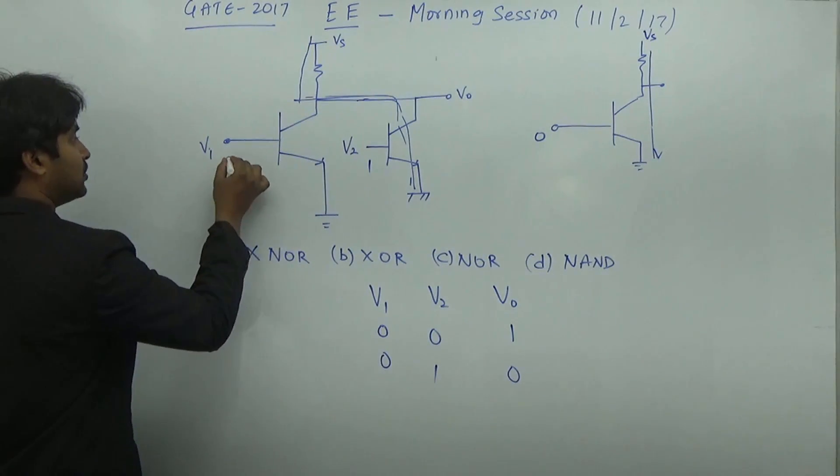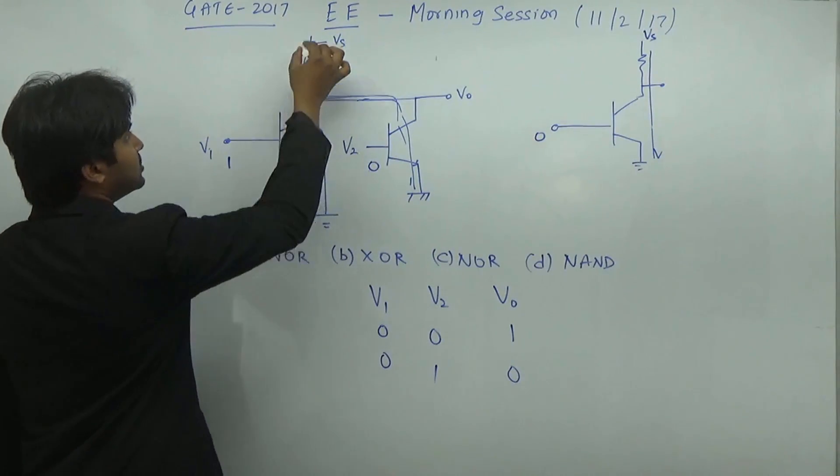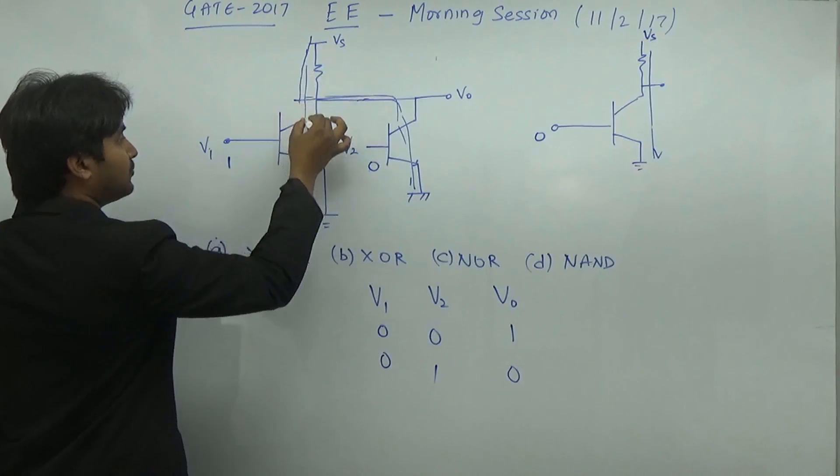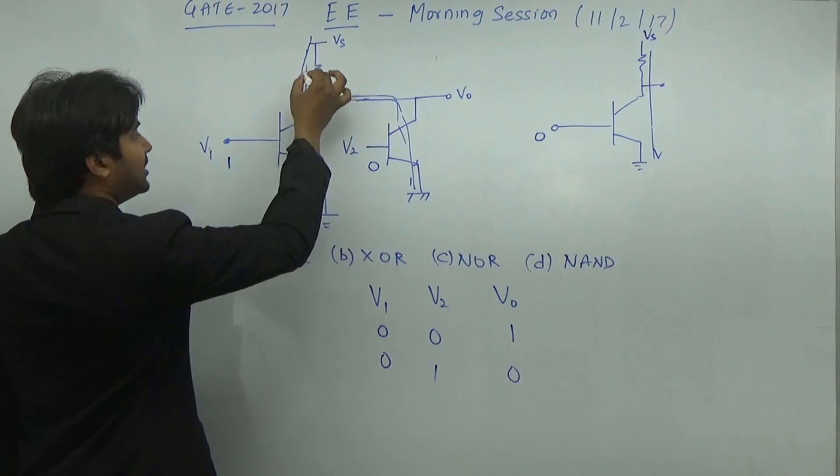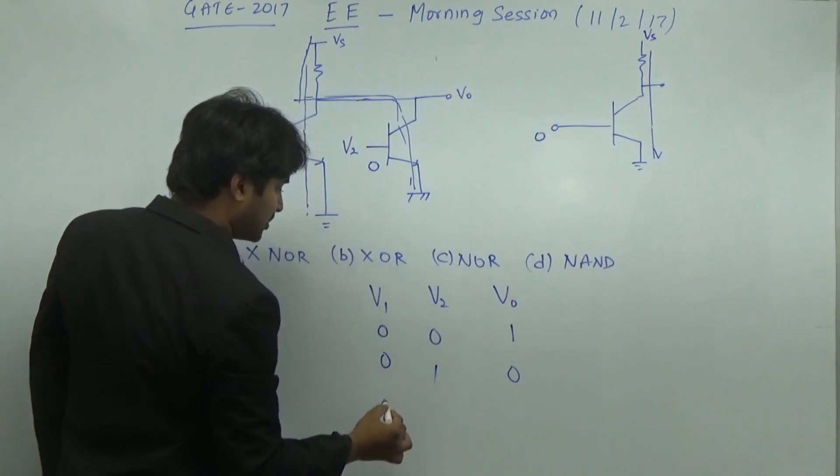When the voltage is equal to 1 here and 0 here, the opposite is going to happen. Whatever voltage is present here is going to flow through this particular BJT. When it flows through this BJT, no voltage will be available here, so the output voltage is once again equal to 0.